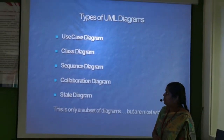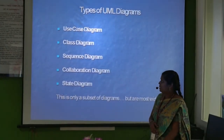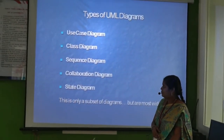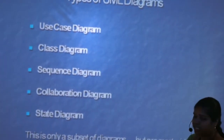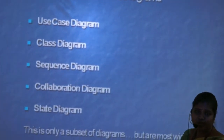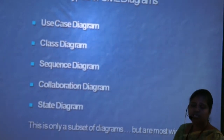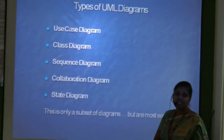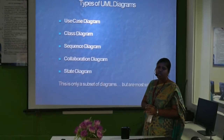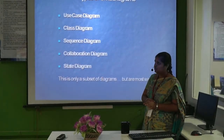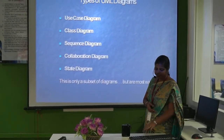These are the types of diagrams. First is the use case diagram, class diagram, state diagram — which we are going to see. Apart from these, there is an activity diagram and deployment diagram that is also available. But we will mostly concentrate on these five things for UML.